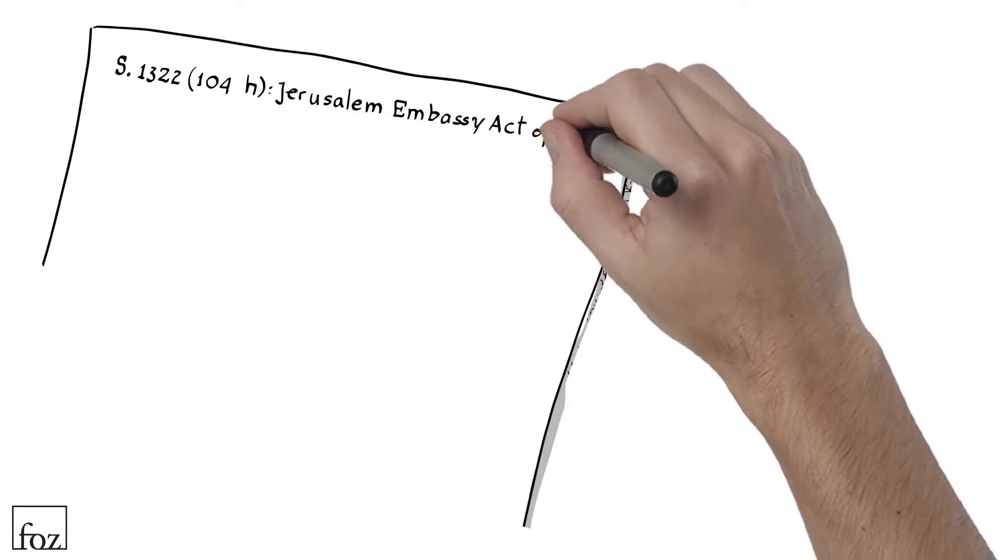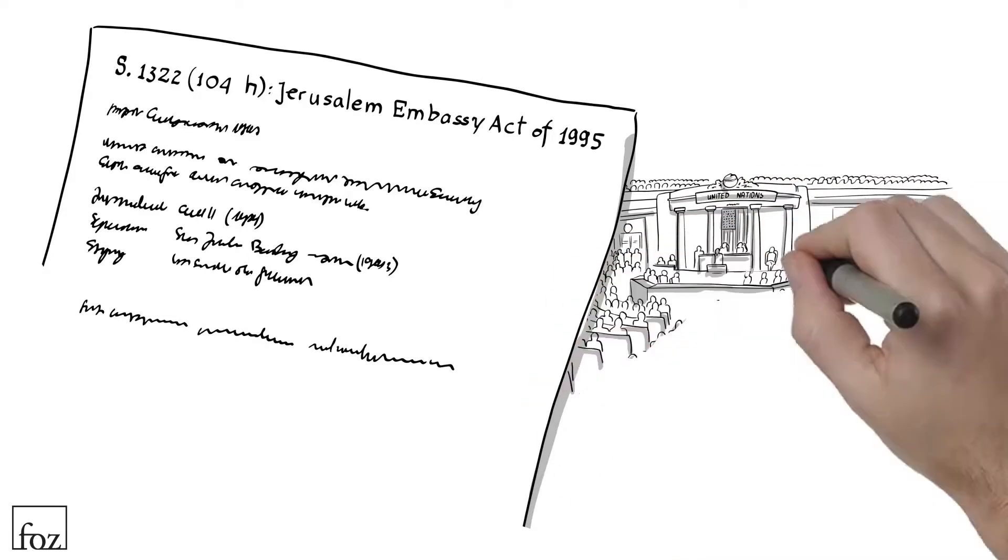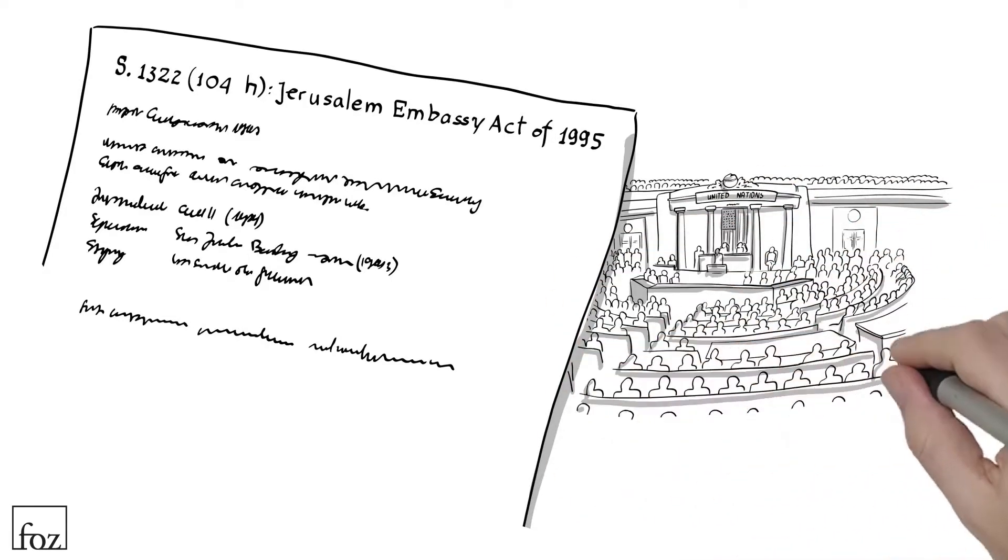In 1995, the Congress overwhelmingly adopted the Jerusalem Embassy Relocation Act, acknowledging Jerusalem as the capital of Israel and that our embassy should be relocated there by 1999.